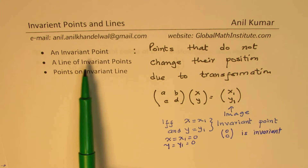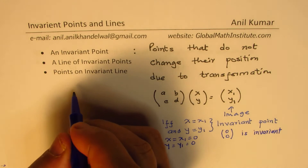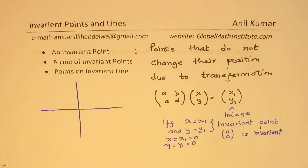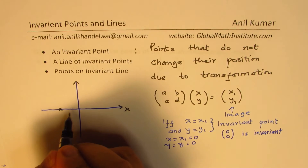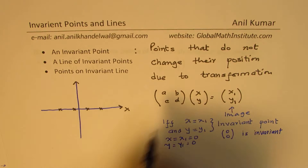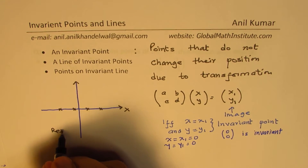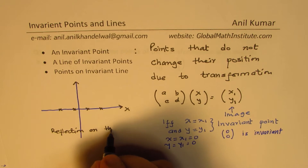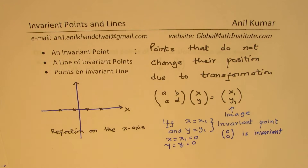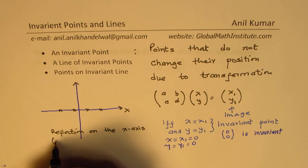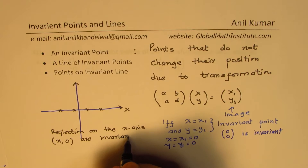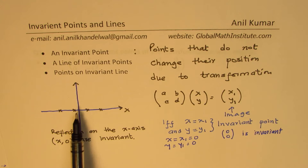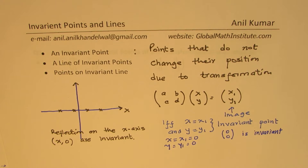The second concept is a line of invariant points. When we consider a line of invariant points, if I have points on the x-axis — let's say different points on the x-axis — and the transformation is reflection on the x-axis, then all the points whose coordinates are (x, 0) are invariant. These points do not move; they are on the line about which you are reflecting, so they do not move. They are invariant points.